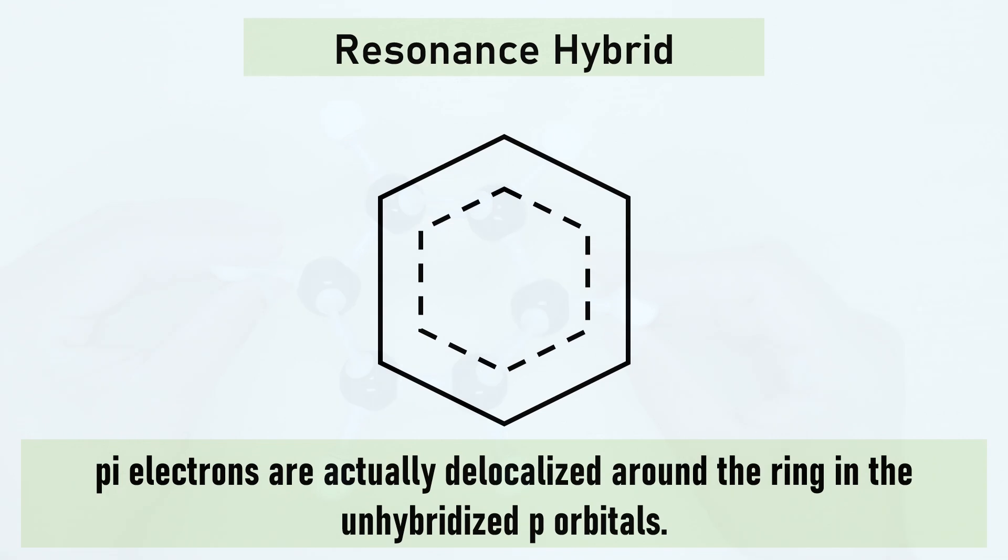The broken lines represent that each carbon-carbon bond exhibits a partial double bond. You can think of these as bonds with a length between a single bond and a double bond length.